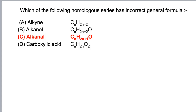In this question we have to find which of the following is incorrect for the homologous series of a given compound. For alkyne, the general formula is CₙH₂ₙ₋₂ — this is correct. For alcohol and ether, the general formula is CₙH₂ₙ₊₂O — this is also correct.